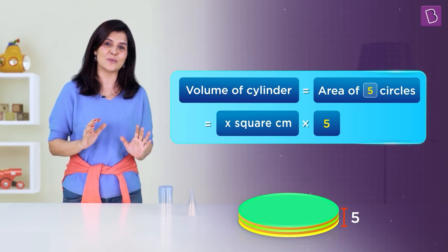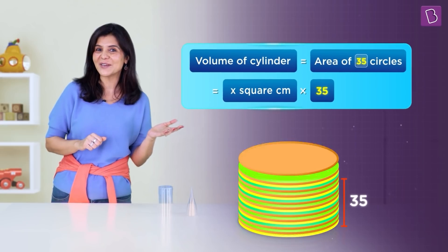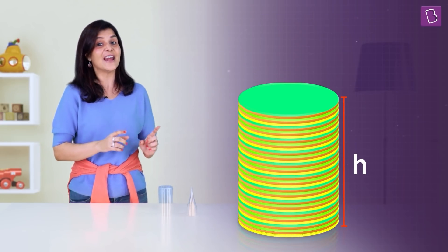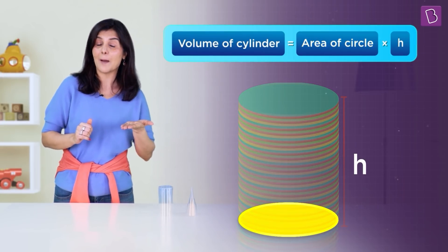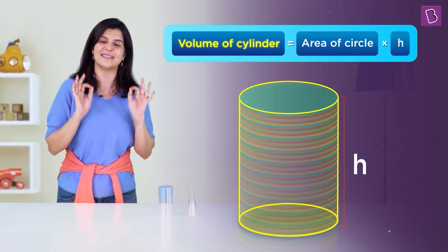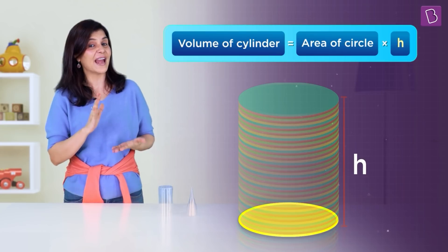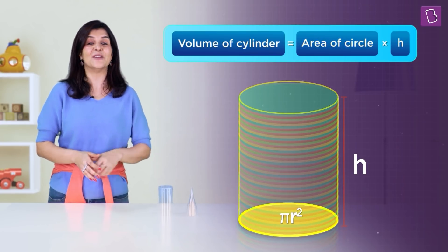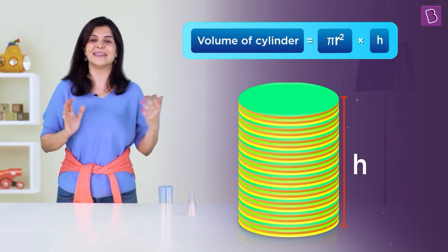So, if we have a cylinder of height h, the volume of this cylinder will be the area of the circle multiplied with the height h. So, the volume of a cylinder is the area of the circle multiplied by h. And we already know that the area of the circle is pi r square. So, the volume of this cylinder becomes pi r square times h.